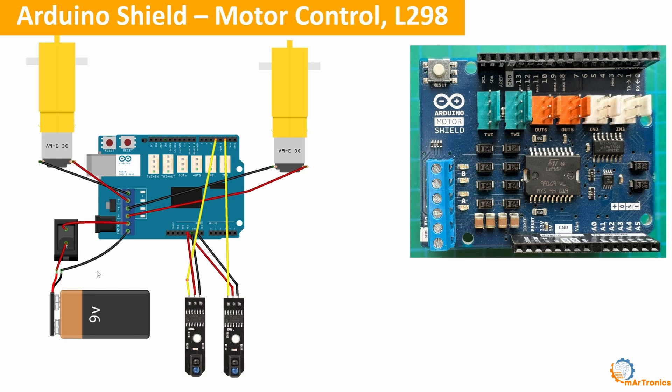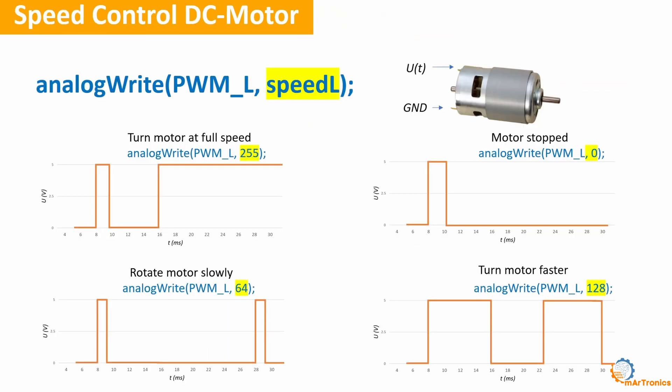In the video about Arduino and DC motors, I explained how to use the Arduino motor shield. Now I will explain how to control the speed of DC motors at the code level. We have this analogWrite function, where we specify the motor, for example, the left motor, and here the speed. This means that the voltage applied to the DC motor is adjusted proportionally to this speed using PWM or pulse width modulation.